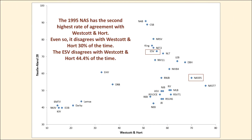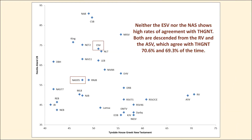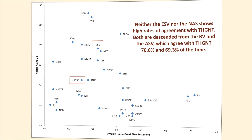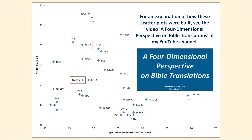A subsequent chart shows percentage agreement with NA28 on the Y-axis and agreement with Westcott and Hort on the horizontal axis. The 1995 NAS has the second highest rate of agreement with Westcott and Hort measured, yet still disagrees with Westcott and Hort 30% of the time. Another chart displays agreement with the Tyndale House Greek New Testament on the horizontal axis; agreement rates for both the ESV and NAS are below 55%. For more details on which verses were examined and how translations were scored, see the video 'A Four-Dimensional Perspective on Bible Translations' at this YouTube channel.